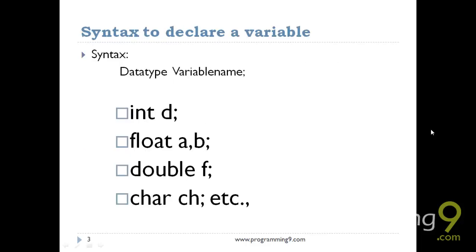This is the basic syntax to declare a variable: int d, float a comma b, double f - these are some examples. Before that, if you see the syntax: data type, space, variable name, and semicolon. This is called a line terminator, and the variable names might be anything in the real world. Generally we should start with an alphabet - that is always a good idea.